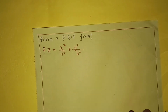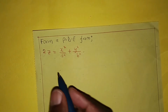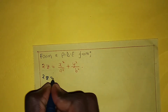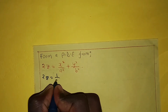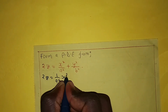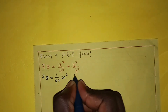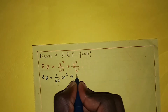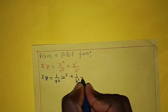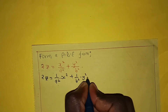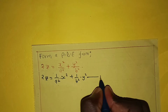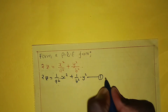We can rewrite this equation as 2z = (1/a²)x² + (1/b²)y². We'll call this equation number 1.